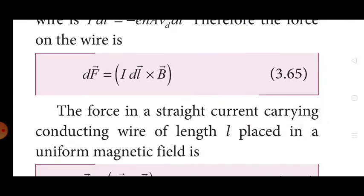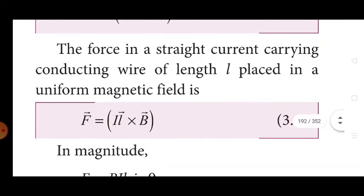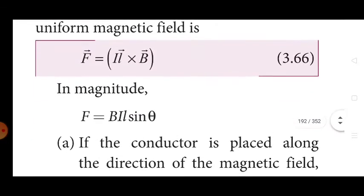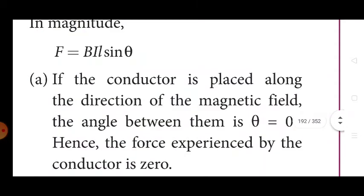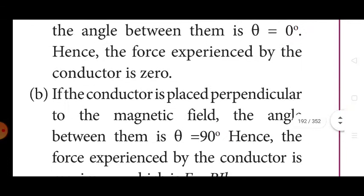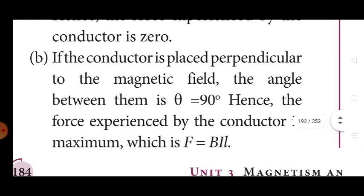The force on a straight current carrying conductor of length L placed in a uniform magnetic field is: F vector = I(L vector × B vector). In magnitude, F = BIL·sinθ. If the conductor is placed along the direction of the magnetic field, the angle θ = 0°, so the force is zero. If the conductor is placed perpendicular to the magnetic field, θ = 90°, so the force is maximum: F = BIL.